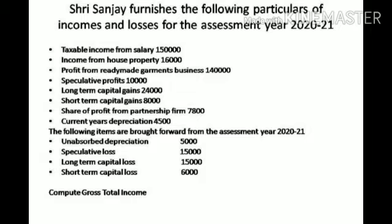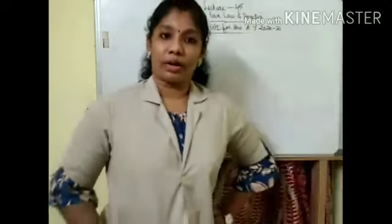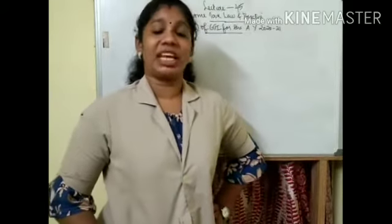The following items are brought forward from the assessment year 2019-20: Unabsorbed depreciation 5,000. Speculative loss 15,000. Long term capital loss 15,000. Short term capital loss 6,000. You are required to compute gross total income for 2020-21.